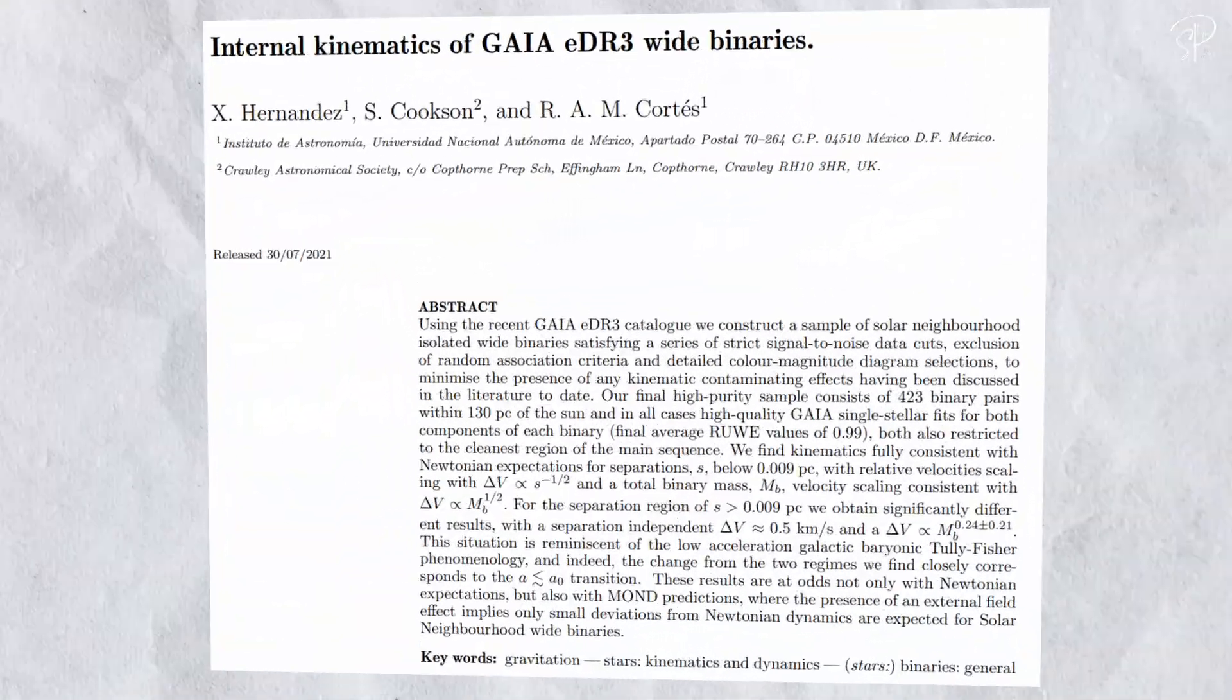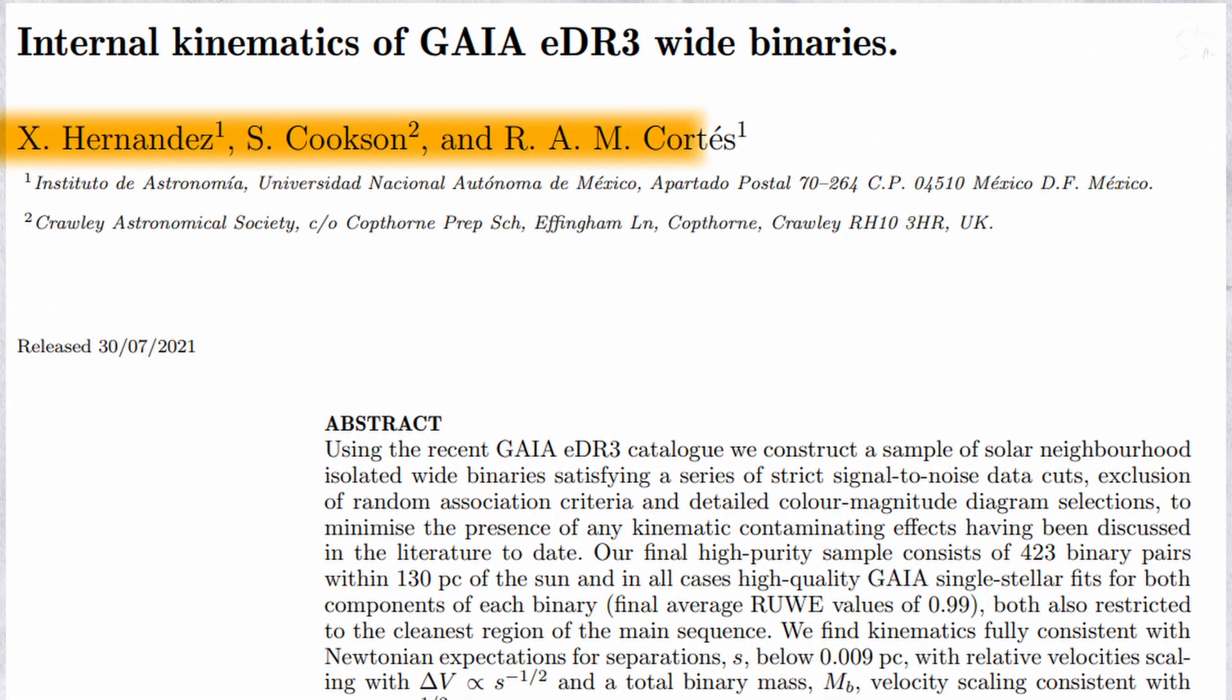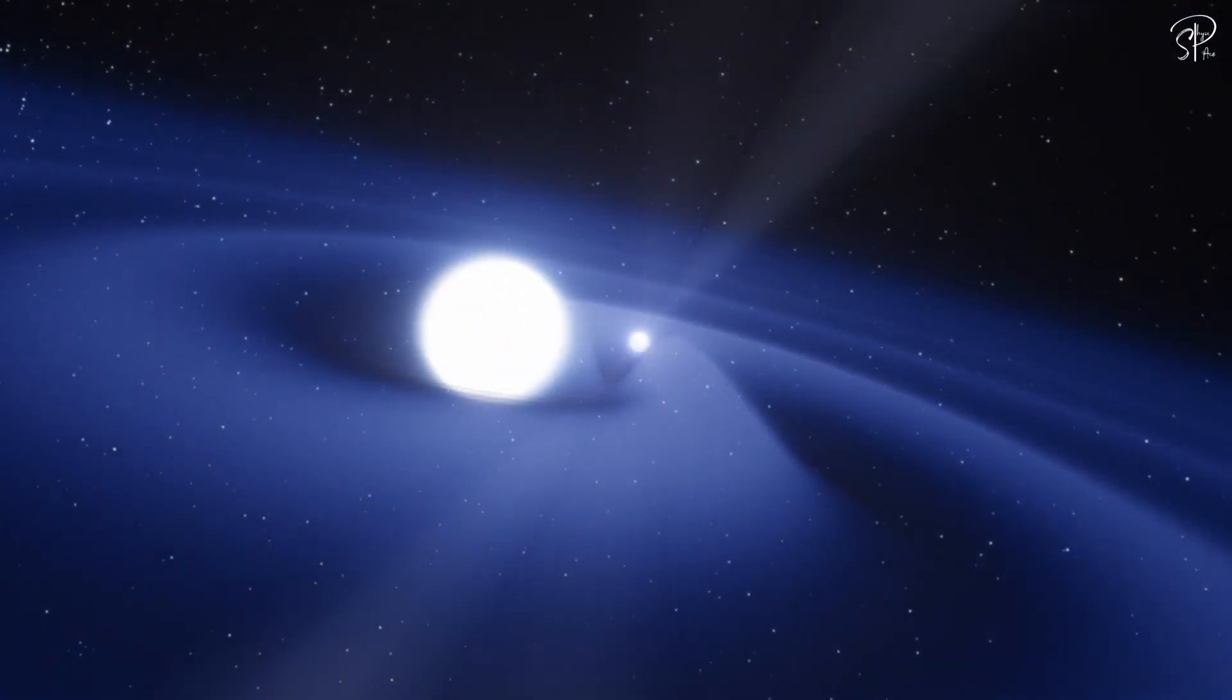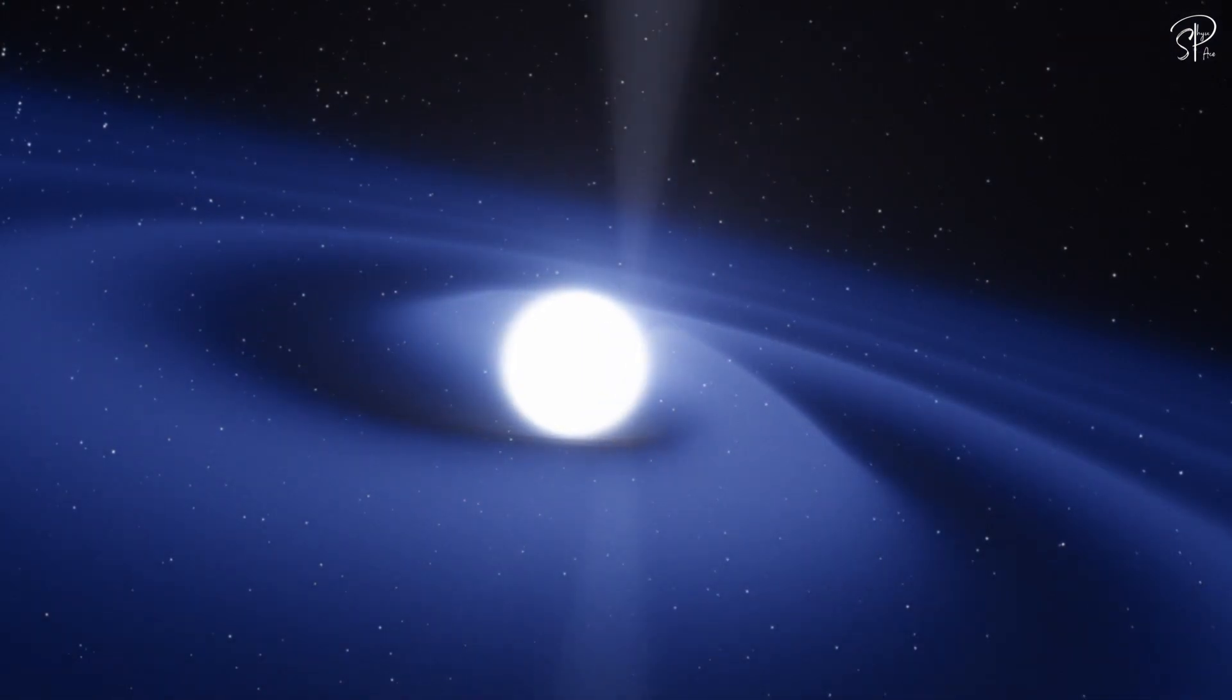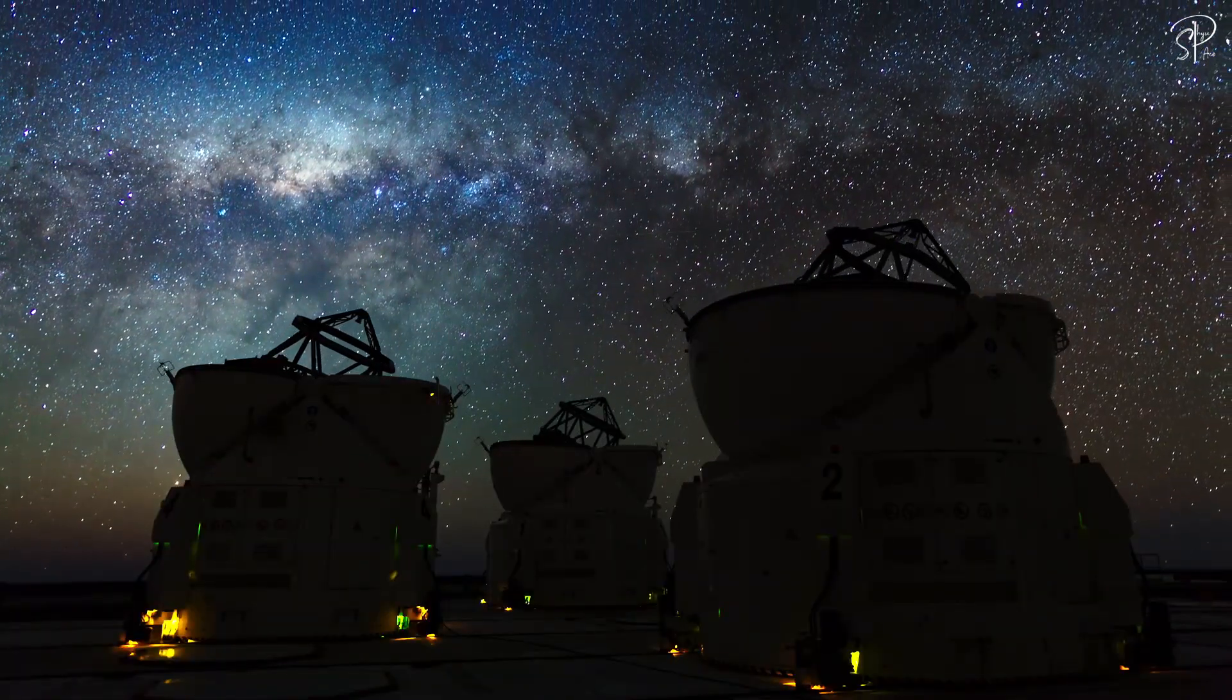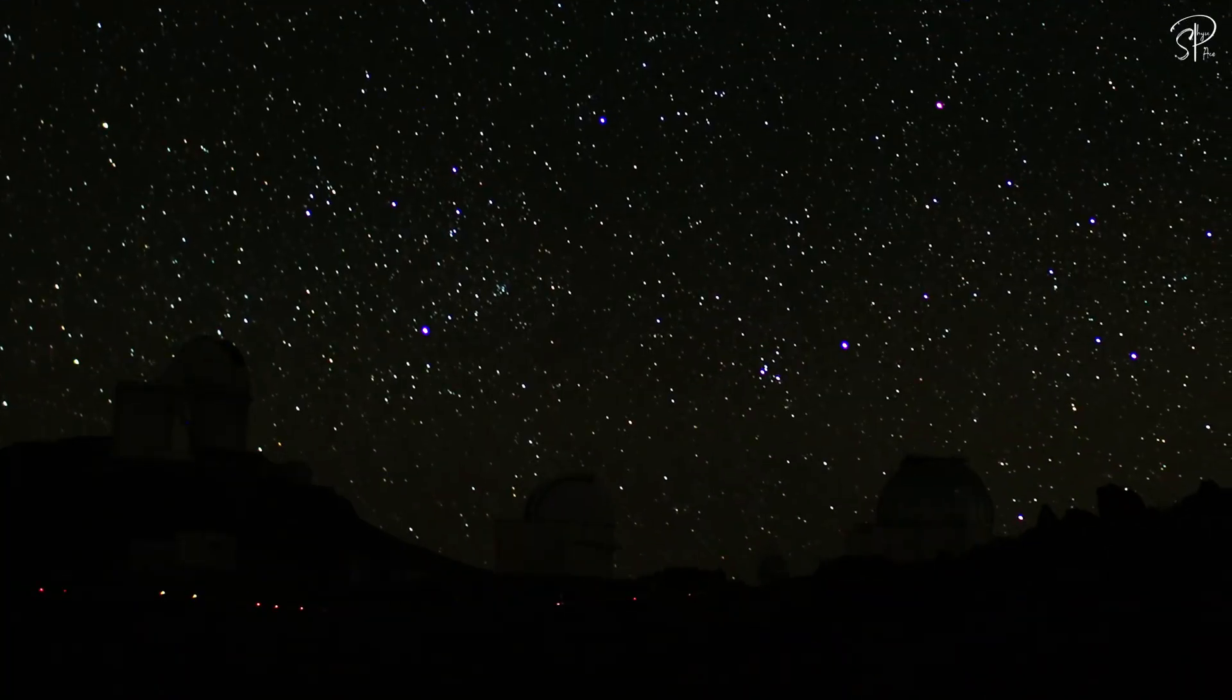The first paper to dive into this challenge was authored by Hernandez, Cookson, and Cortes in 2022. They analyzed Gaia's data to observe how velocity changed concerning separation distance. Despite Gaia's precision, the data remained scattered, and neither the Newtonian predictions nor MOND seemed to provide a perfect fit.